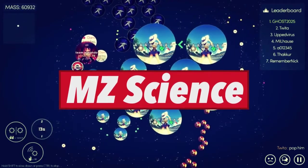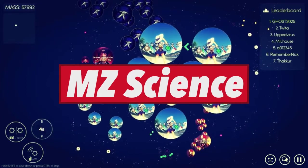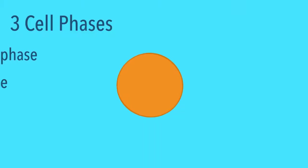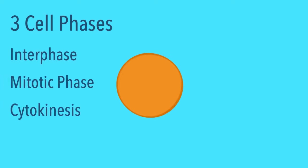In MZ Science, we will discover the stages of the cell cycle and mitosis. So to start off, there are three main steps in the cell cycle: interphase, mitotic phase, and the cytokinesis phase.